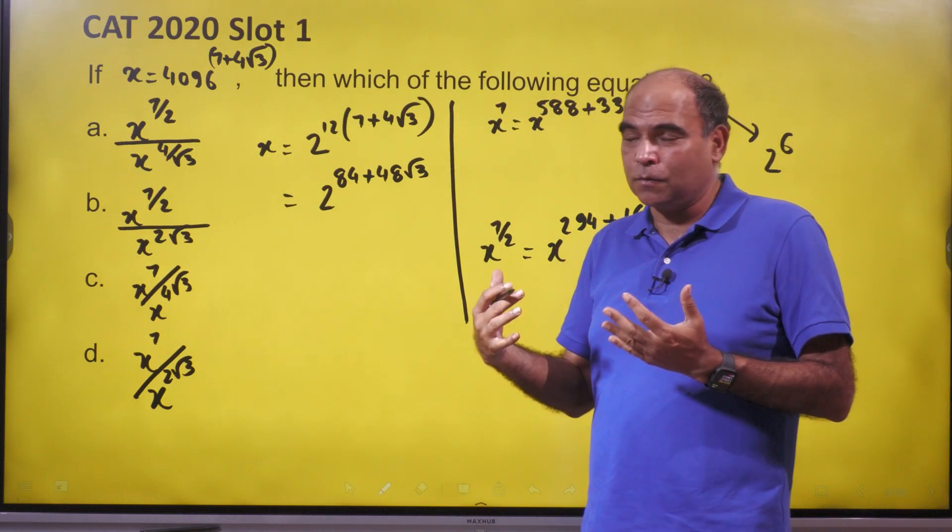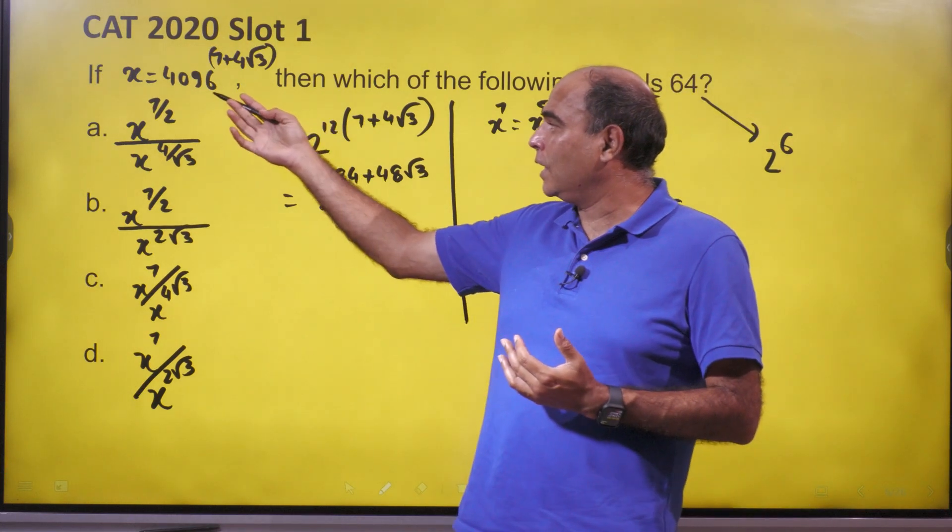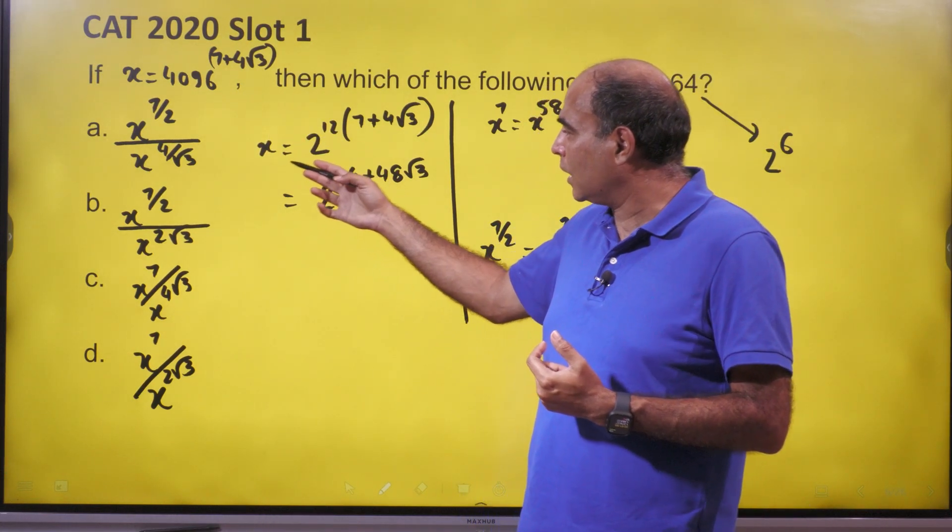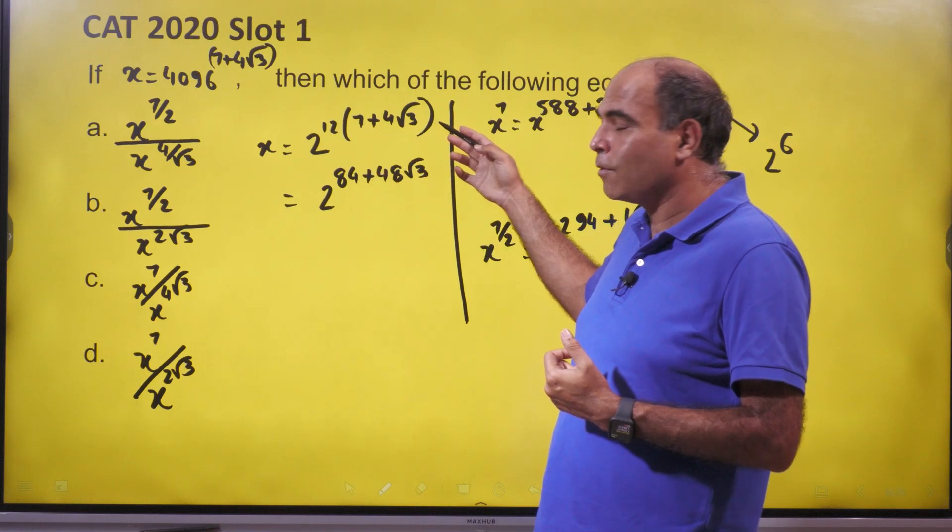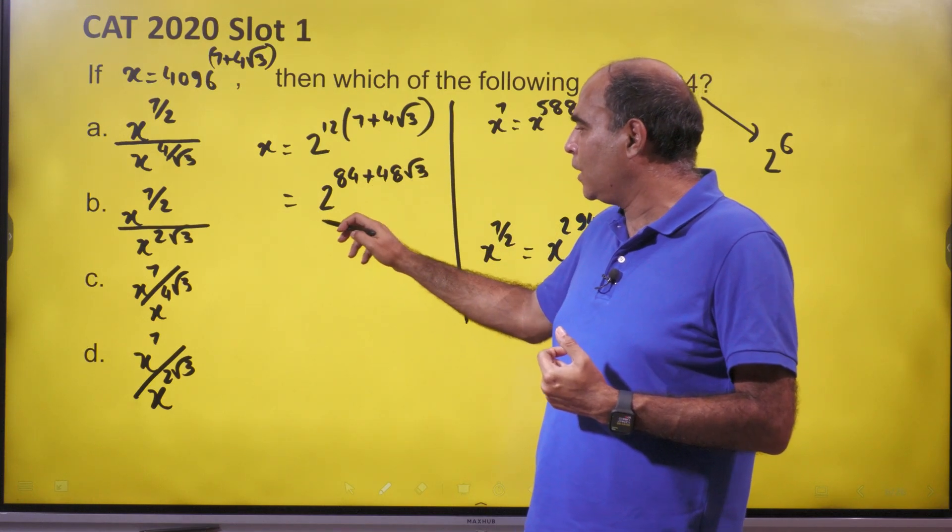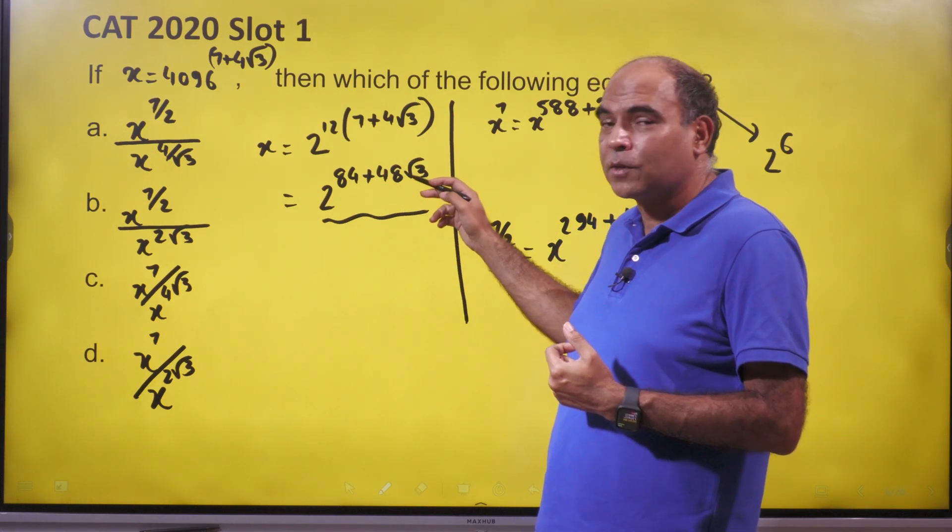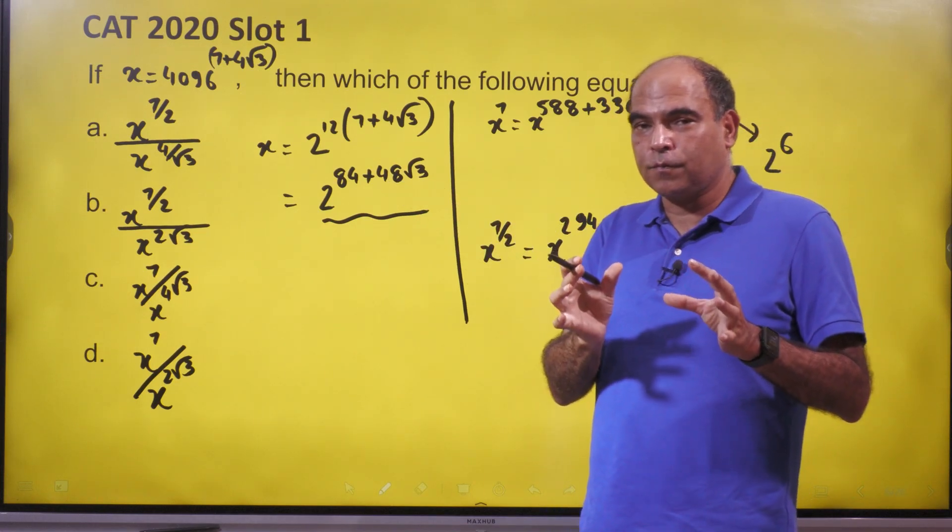The first reaction is 4096 is 2 raised to 12. So x equals 2 raised to 12 into 7 plus 4 root 3, which obviously ends with x equals 2 raised to 84 plus 48 root 3. That's the first part of the solution.